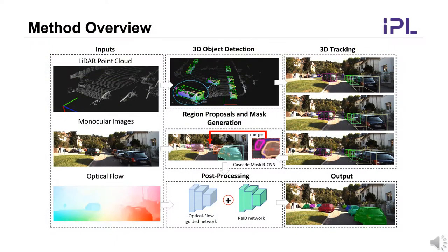Here is the framework of the proposed LIFTS algorithm, which consists of a three-stage pipeline. First, 3D object detection is performed on the LiDAR point cloud to get accurate object 3D bounding boxes, which enable us to do more robust 3D tracking. Then, the projections of these 3D bounding boxes are used as pre-computed proposals to Cascade Mask RCNN, not only to generate a segmentation mask, but also to help merge small objects not previously detected in 3D.